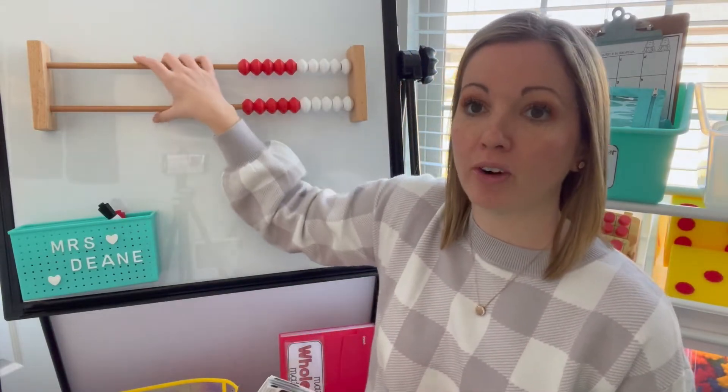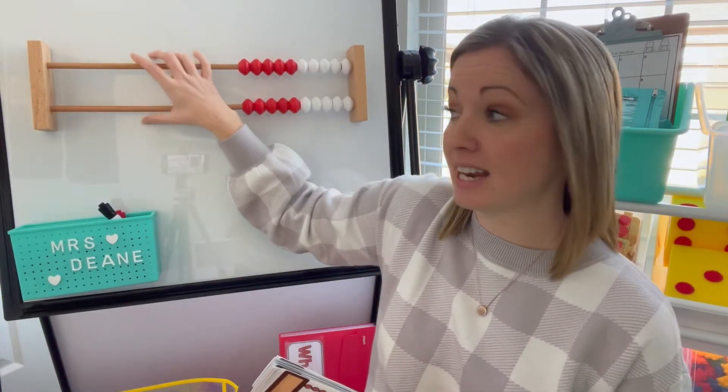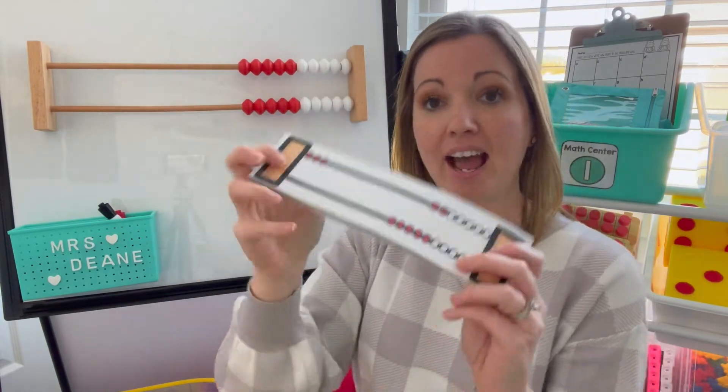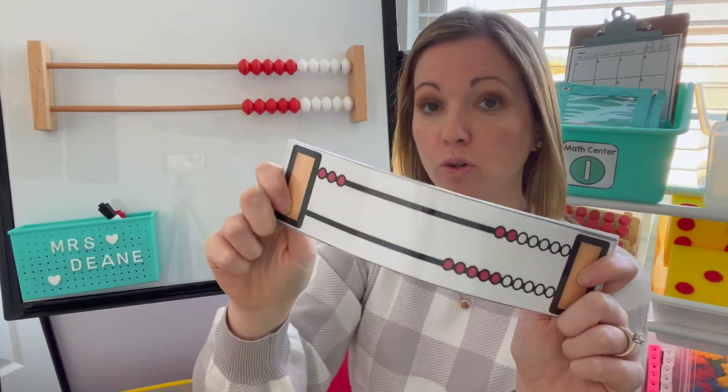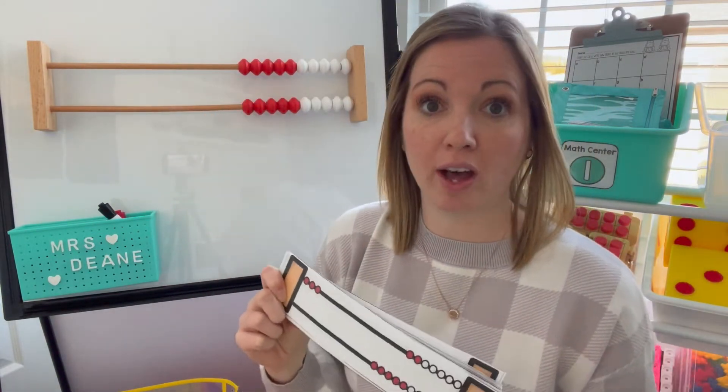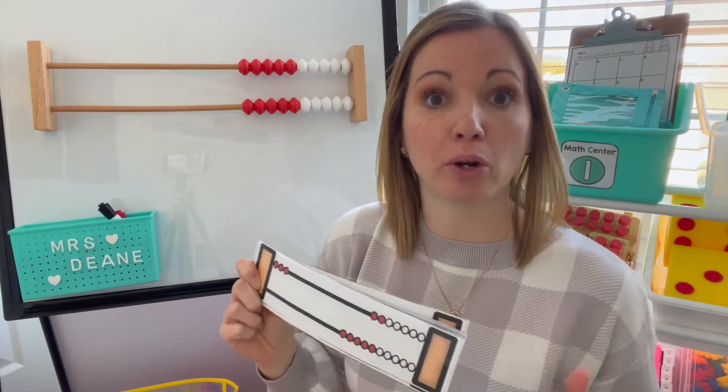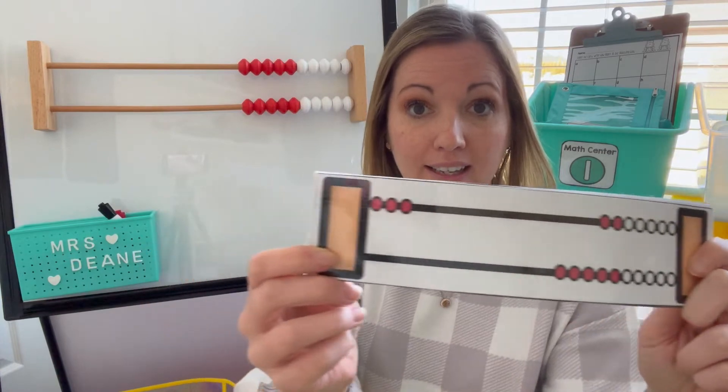For our whole group activity we have our Jumbo Rekenrek — this is magnetic so it's sticking right to the board — and I have our Rekenrek quick image cards. We've played quick images before so they know how to play, but you might want to refresh them. Remember, when we play quick images I show you it quickly and then you have to remember in your head how many you see. When you know, just like number talks, put your thumb up.